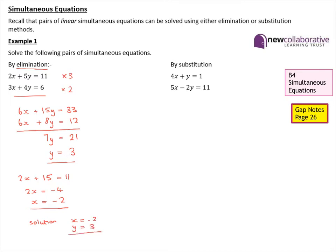For the second pair of linear simultaneous equations we're going to use the substitution method. This means we take one of our equations and rearrange it to make either x or y the subject. We then substitute that into the other equation, giving us an equation we can solve to find x or y, and then continue from there.